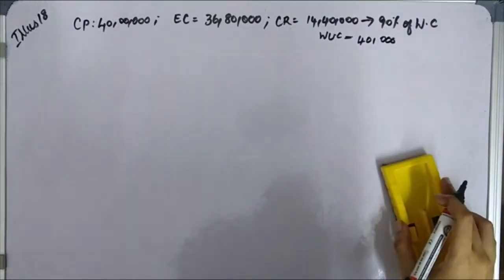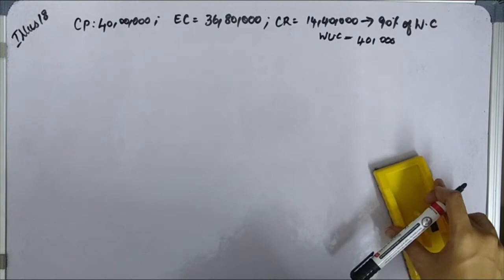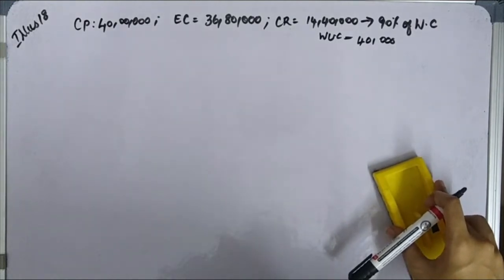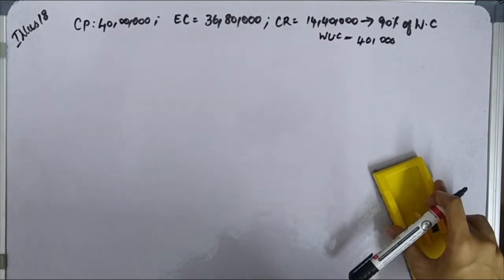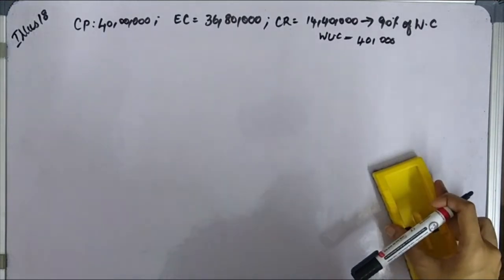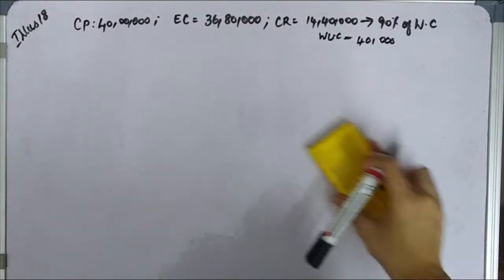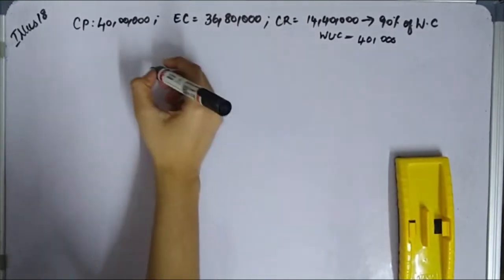Now we prepare the contract account. Material costing 20,000 was damaged — this is treated as an abnormal loss. Plant is considered to have depreciated at 25%. Prepare the contract account and show all figures that can possibly be credited to the P&L account.